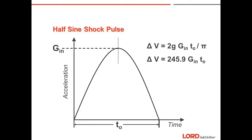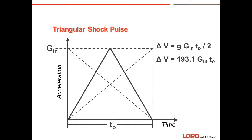In the formulas, small g is the gravitational constant, and today it will be 386.2 inches per second squared. The second type of shock pulse you may encounter is a triangular shock pulse. Triangular shock pulses can also take the form of initial peak, terminal peak, or a sawtooth pulse. This is representative of a ballistic type of incident. Again, the delta V can be calculated by G, the gravitational constant, times the G's in, times T sub zero, all divided by two.